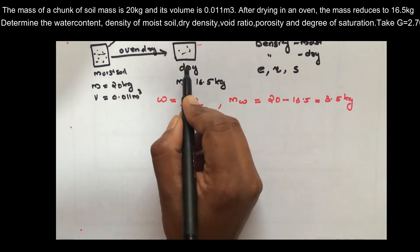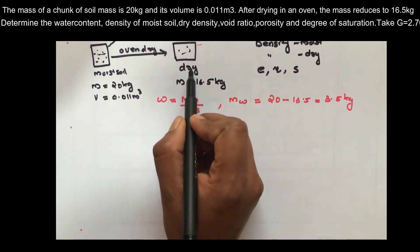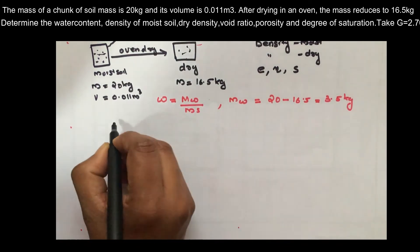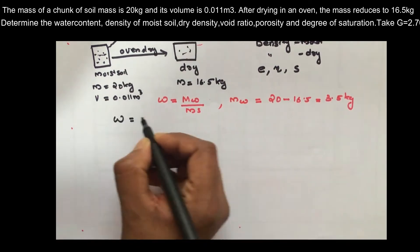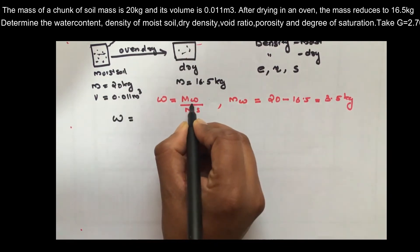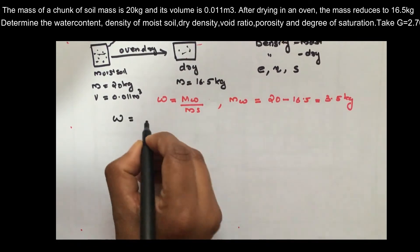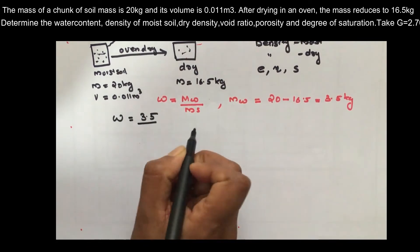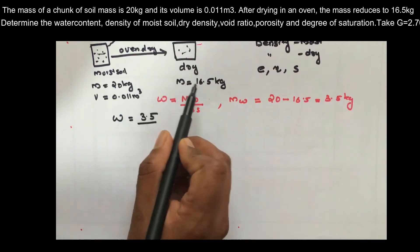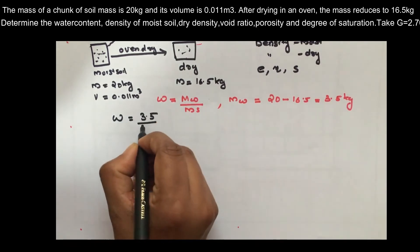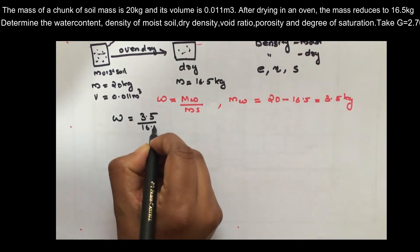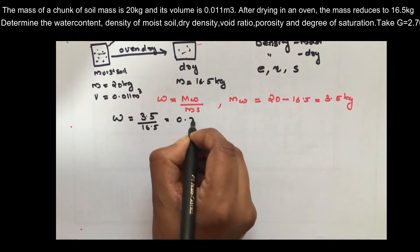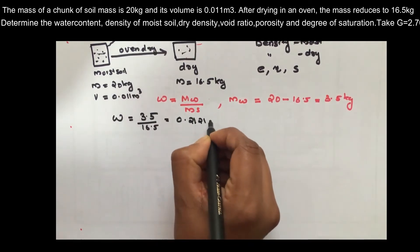The dry soil contains no water. The mass of water is 3.5 kg and the mass of solids is 16.5 kg. The water content is 3.5 divided by 16.5, which equals 0.2121, or 21.21%.